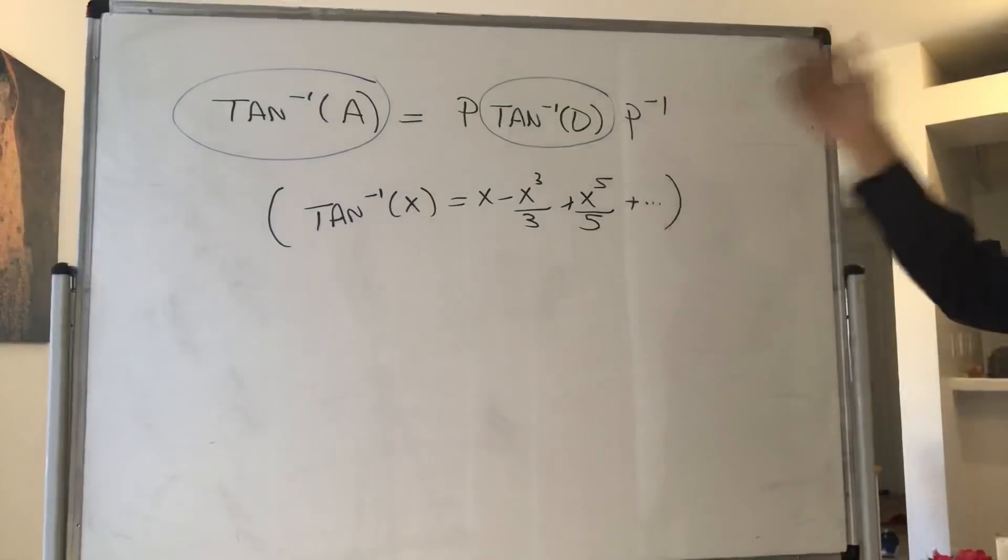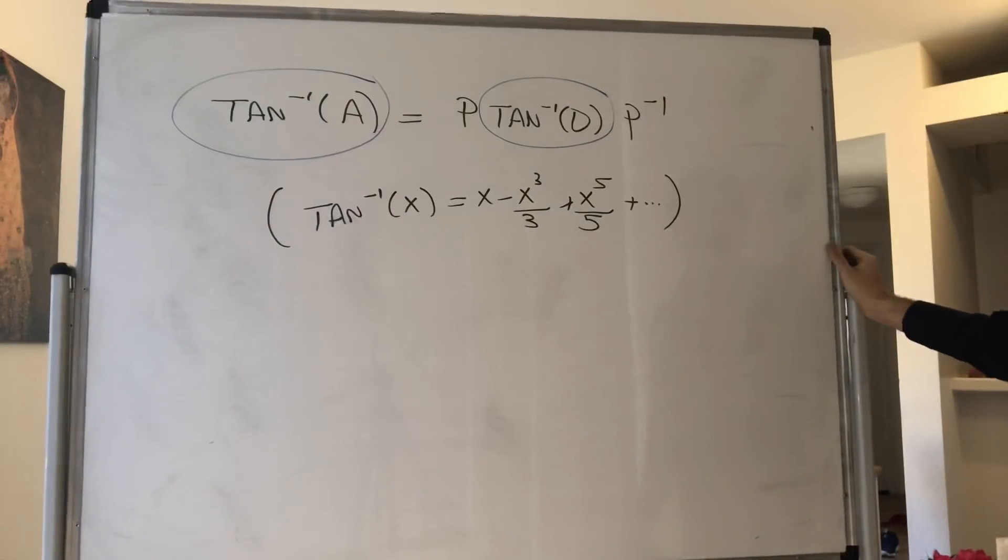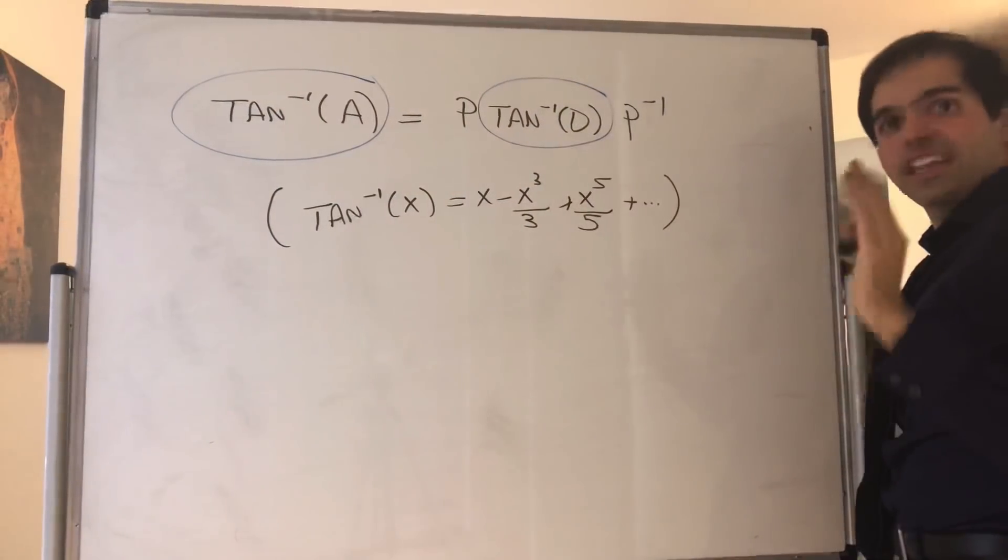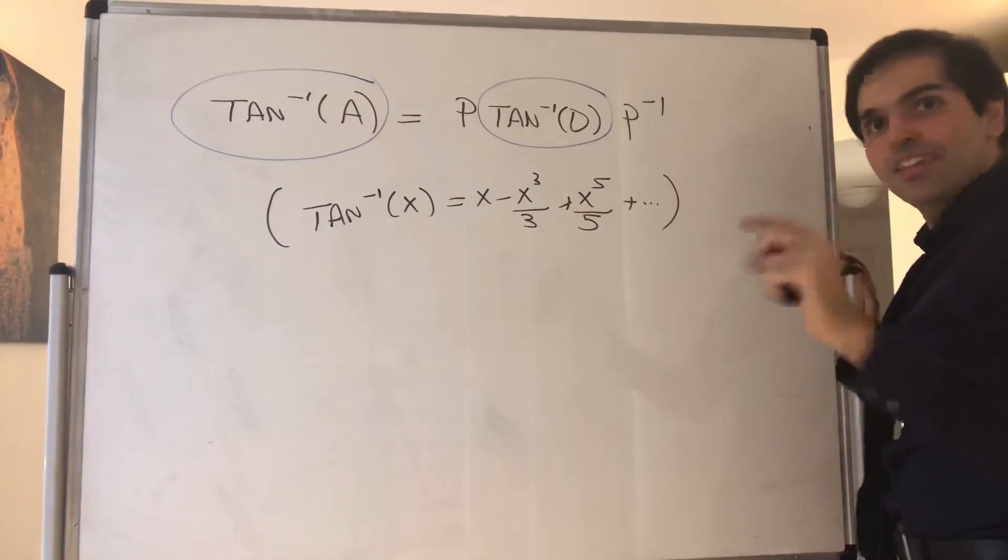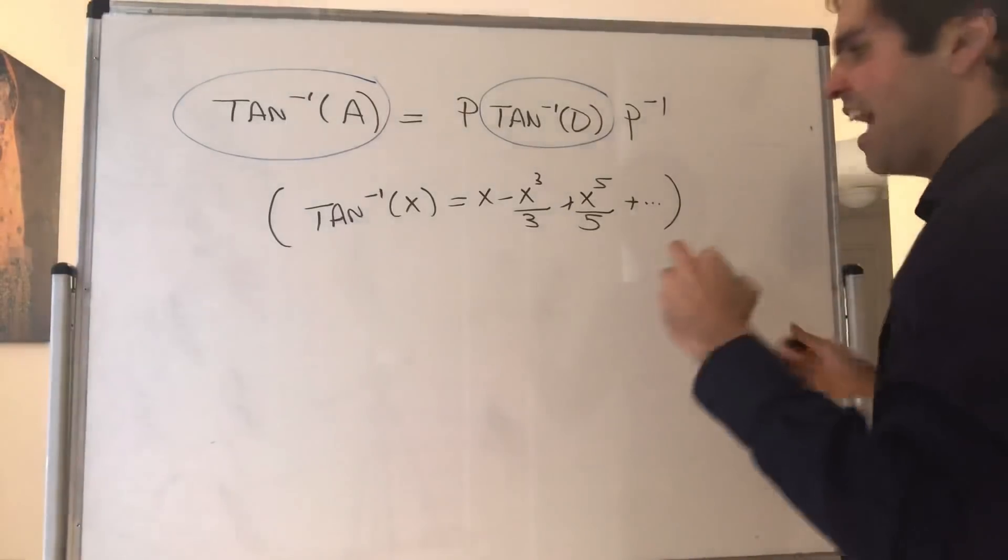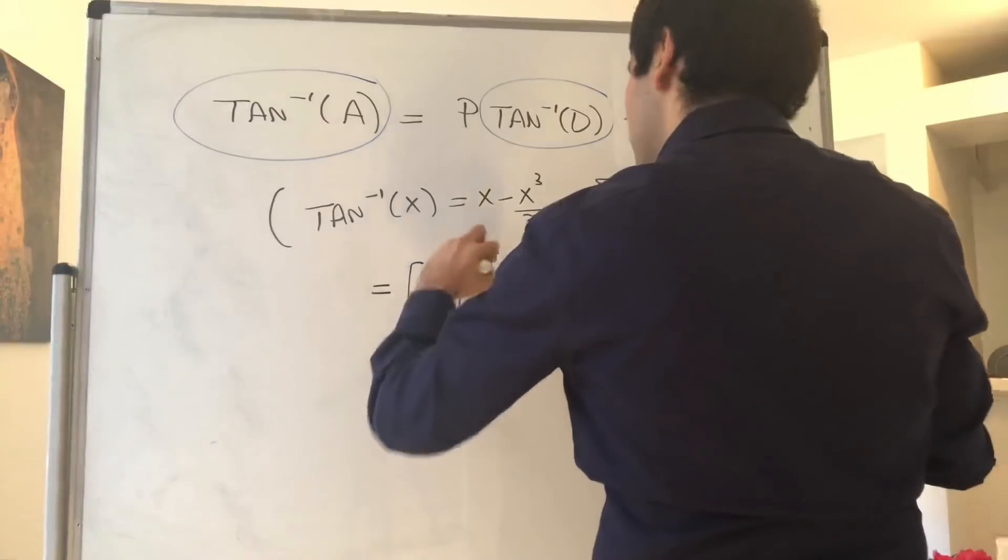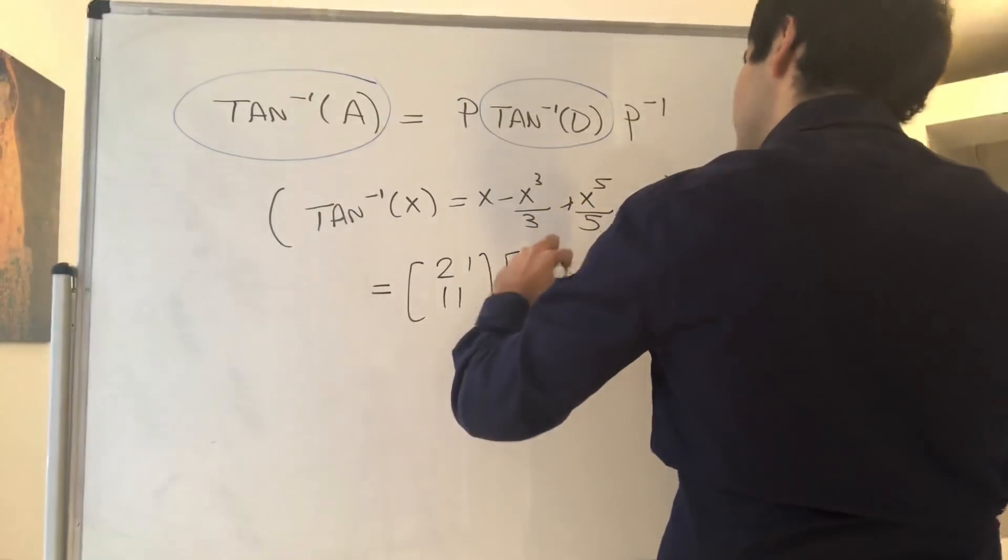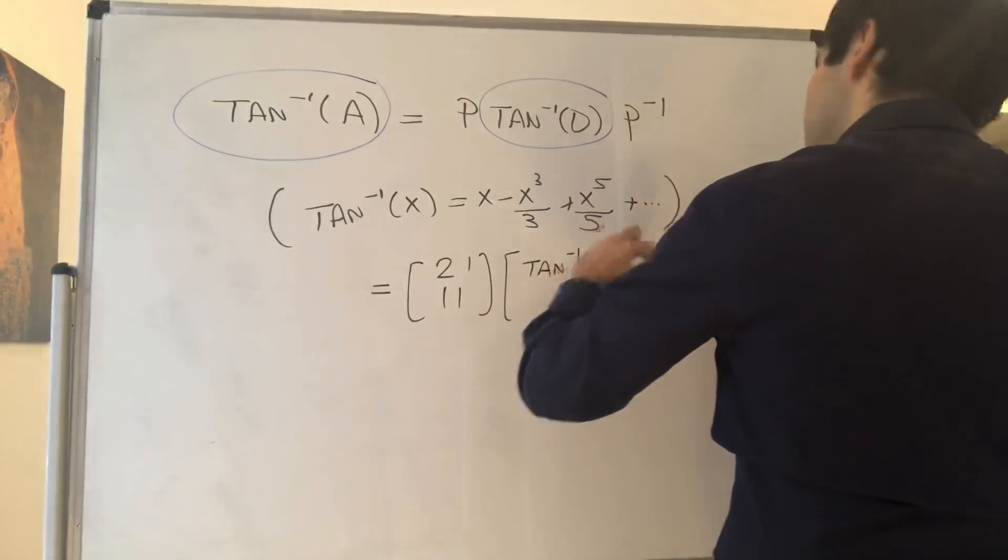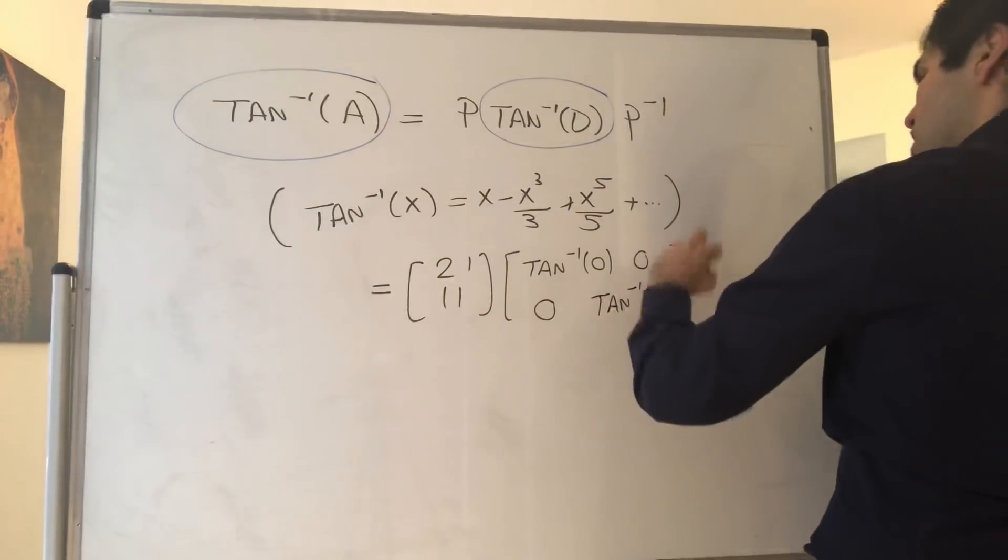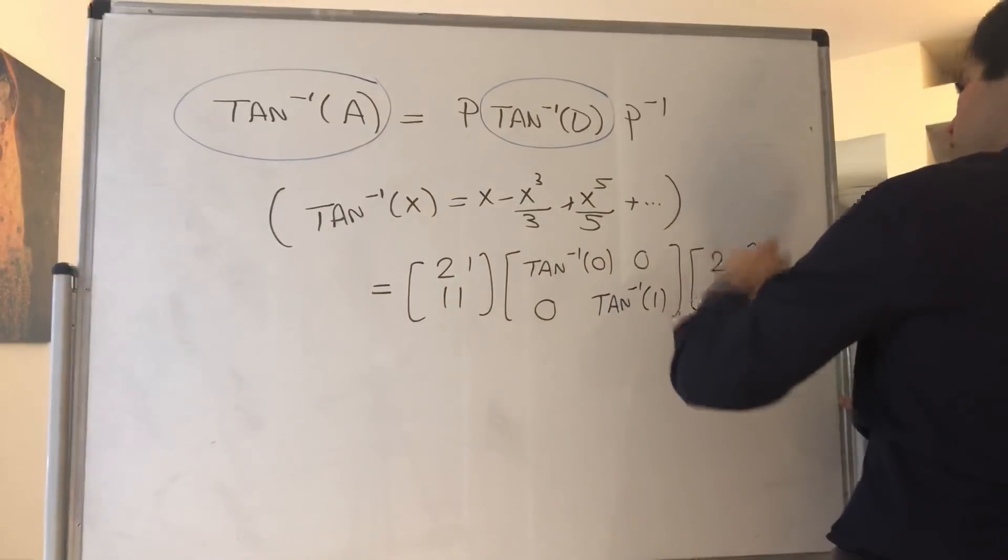But here's okay because the eigenvalues, I think, are 0 and 1, so not too bad. And therefore, so how do you calculate arctangent of a diagonal matrix? You just do arctangent of the diagonal entries. So here we get [2, 1; 1, 1], [arctangent of 0, 0; 0, arctangent of 1], and then [2, 1; 1, 1] inverse.